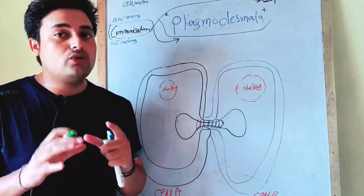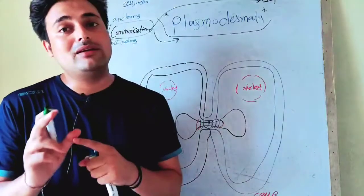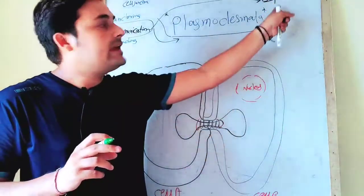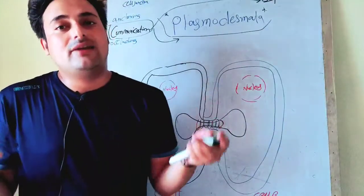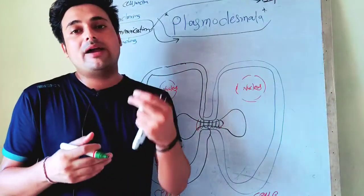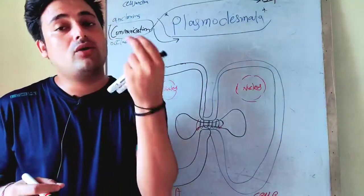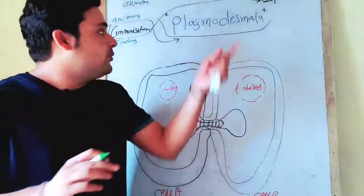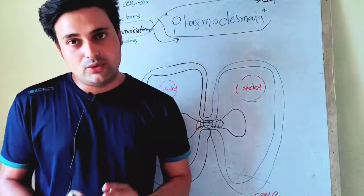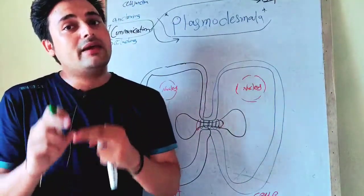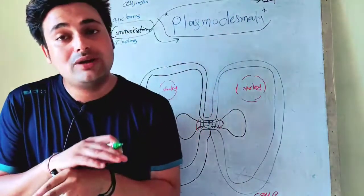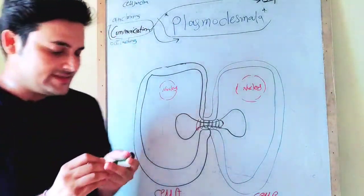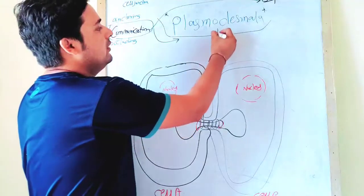Plasmodesmata are functionally similar to gap junctions. They are working with the same functions — providing transport of small molecules, inorganic molecules, or ions between two neighboring cells. That is the function. However, their structure is totally unrelated to each other; the function is the same but the structures are different.